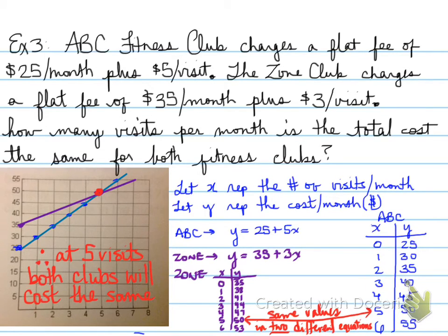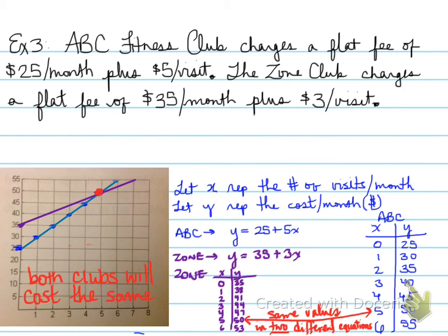So, if you plan on visiting a club, either of these clubs, five times in a month or less, your best bet is to consider the blue club because they're cheaper. The purple club is cheaper when it's past five points. Don't forget, we want to label some axes here, folks, so that's going to be important.